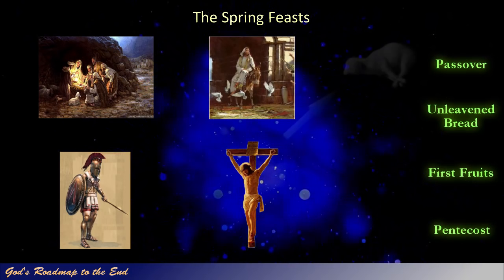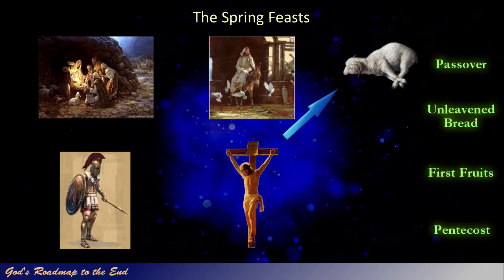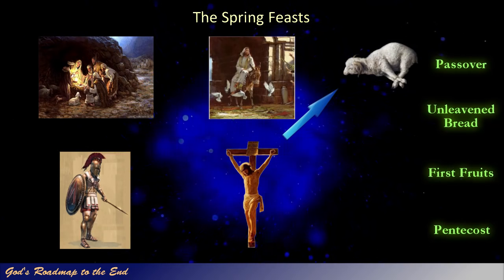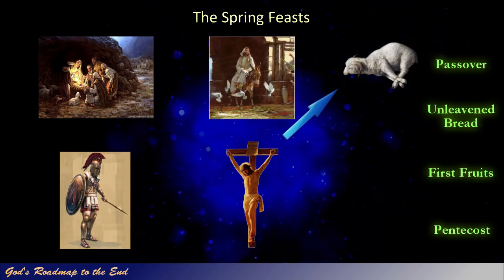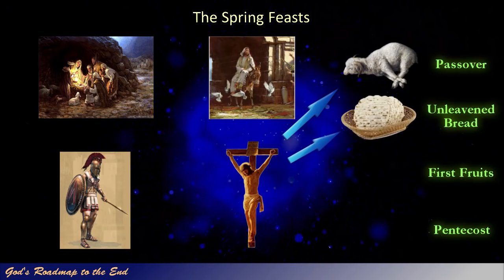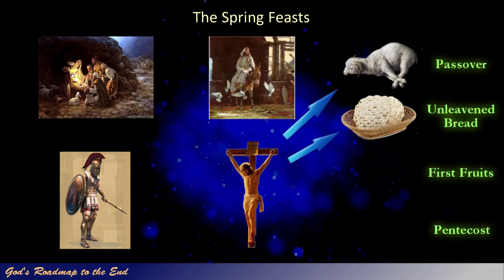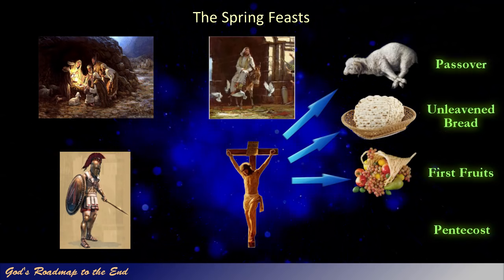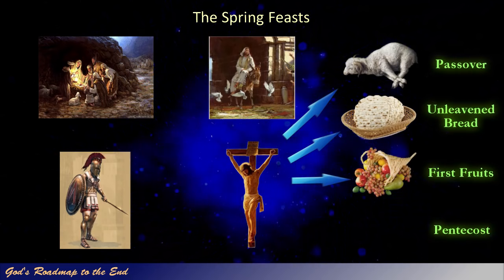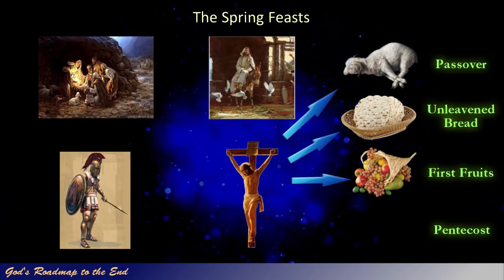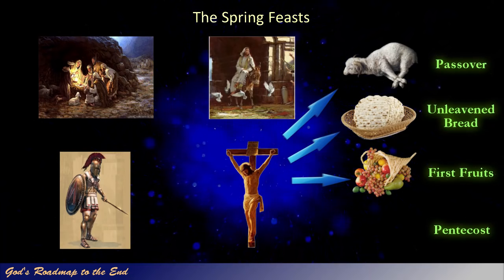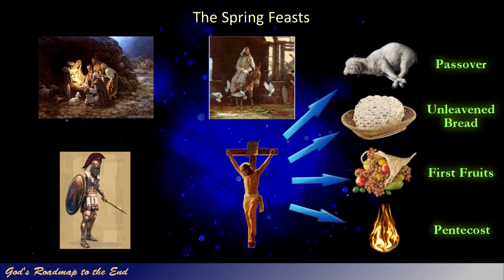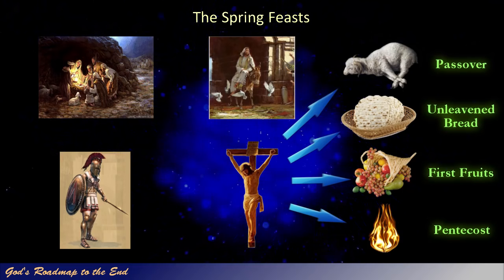Yeshua was God's perfect Passover lamb, whose blood would be shed once and for all for the remission of all sin on the day of Passover, and to bring in everlasting righteousness as prophesied in Daniel 9:24. Yeshua was the unleavened bread, the only person ever to live on this earth without any sin in his life. He presented himself to God as the first fruits of the harvest of souls that would be resurrected on the day that Yeshua rose from the dead. Fifty days later, the Holy Spirit was poured out on the day of Pentecost, the beginning of the period of God's church on earth, and the beginning of the time of the Gentiles.